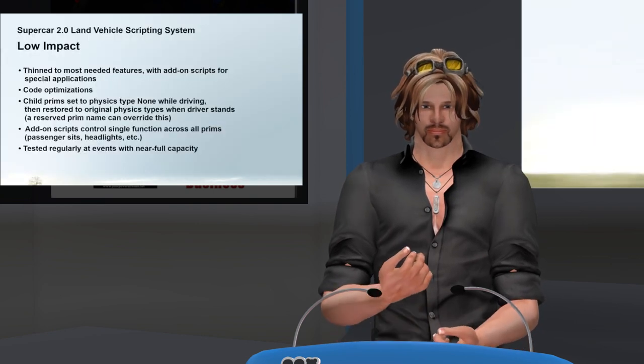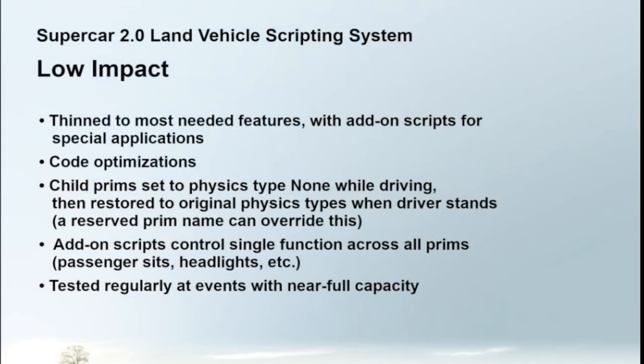Low impact has always been one of the most important features. Development has been an iterative process, adding only features that are needed and thinning out features when possible to keep memory footprint low. Features needed for certain use cases were sometimes moved to separate scripts, keeping the core script as thin as possible. There were many performance optimizations along the way. For example, llGetVel — which queries the server for the velocity of the car — was a source of significant lag and was present in the original engine script and many scripts found in script archives. We decided to remove it from the core script control loop.